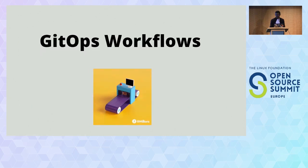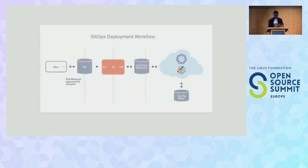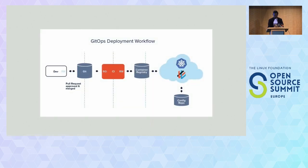GitOps workflows are mainly of three types. Before, we used to follow the waterfall method. After that we moved to agile methods, and today we are following DevOps and GitOps.